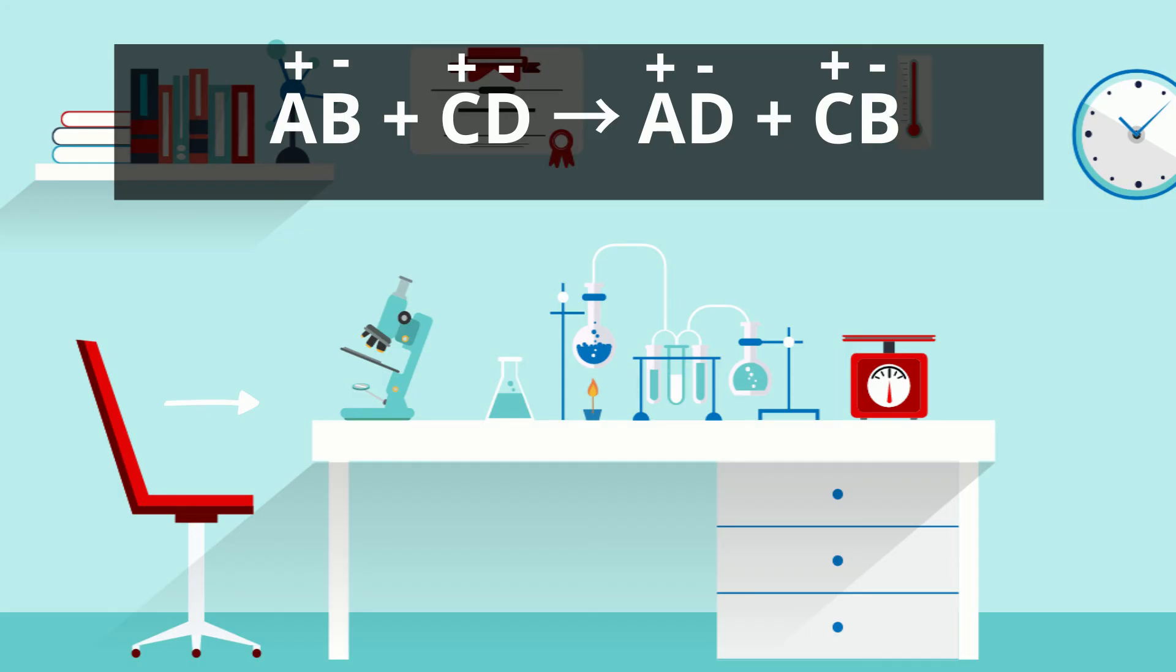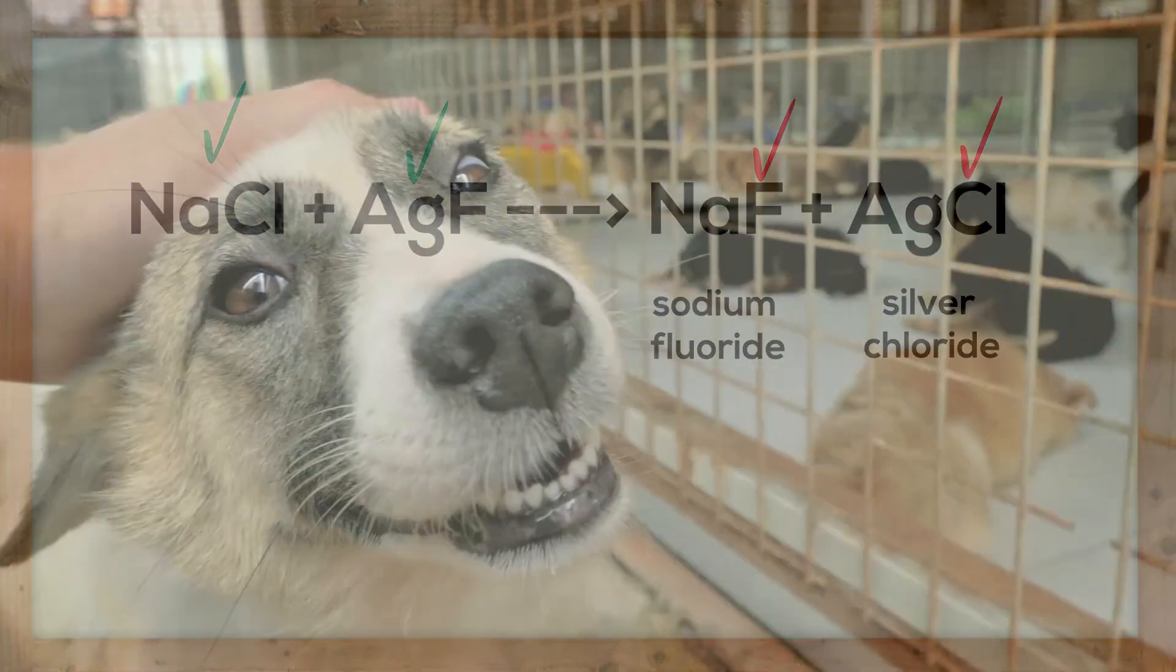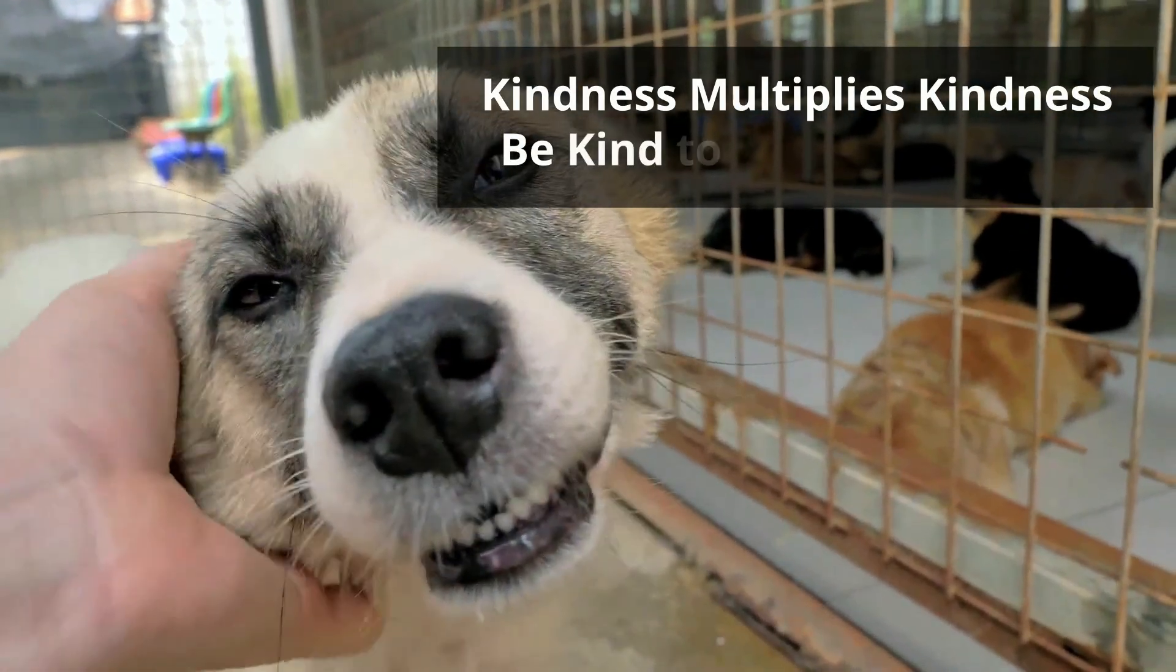And here's the reaction. Notice that the chloride and fluoride ions change places. So two new compounds are formed: sodium fluoride and silver chloride. Thanks for watching and remember kindness multiplies kindness. Be kind to someone today.